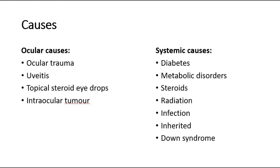For systemic causes, there are diabetes, metabolic disorders such as galactosemia or hypocalcemia, prolonged usage of steroids, radiation, infections like congenital rubella, and inherited diseases — for example, congenital cataract, or in adults, conditions like myotonic dystrophy. Cataract is also commonly seen in Down syndrome.